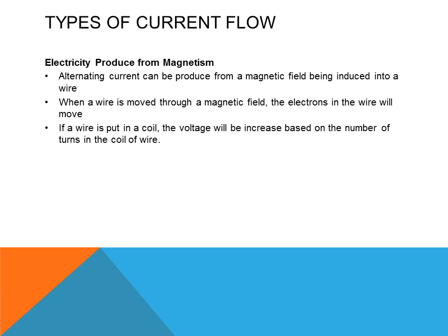Electricity produced from magnetism: alternating current can be produced from a magnetic field being introduced into a wire. When a wire is moved through a magnetic field, the electrons in the wire will move. If a wire is put into a coil, the voltage will increase based on the number of turns in the coil. The more turns or the bigger the coil, the stronger the voltage produced. As the magnetic field is induced into a coil, the faster the coils move through the magnetic field, the faster the current will flow.